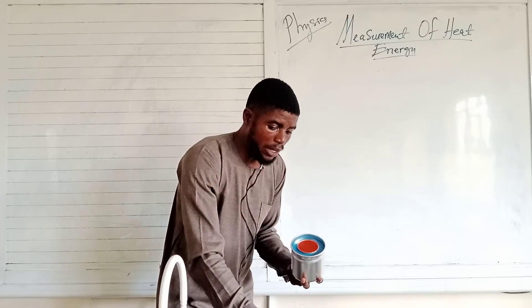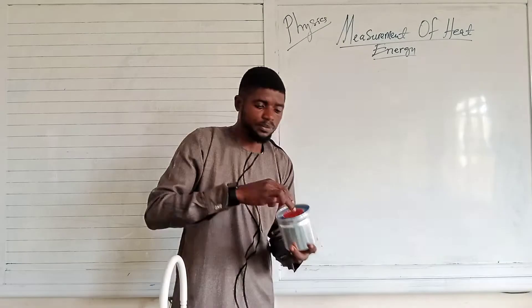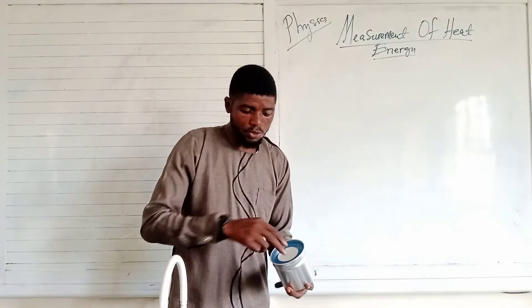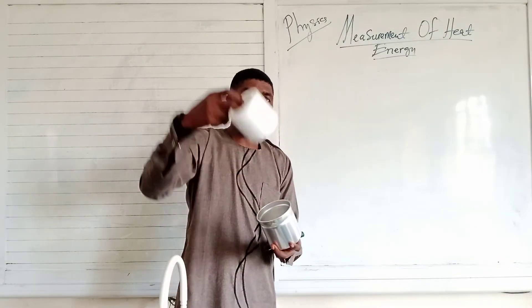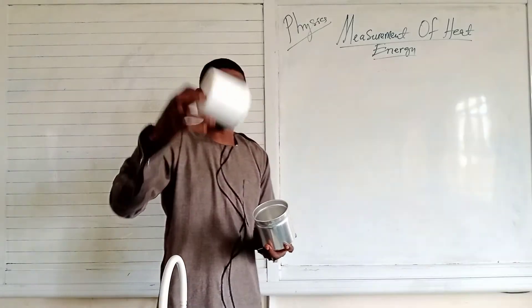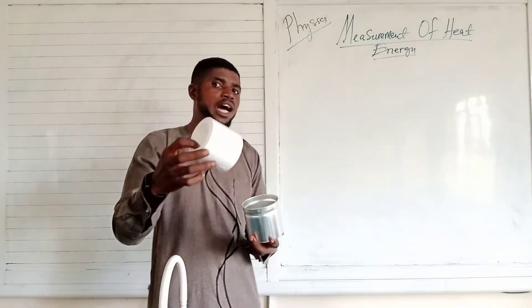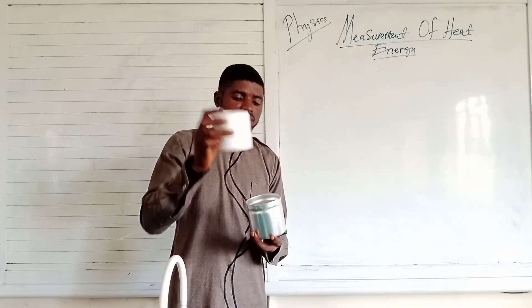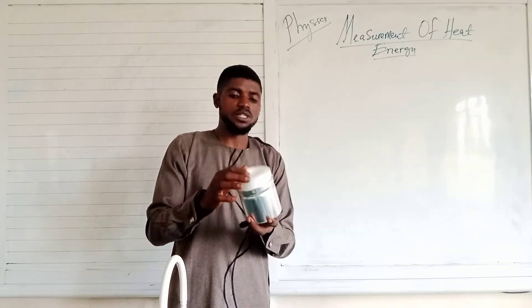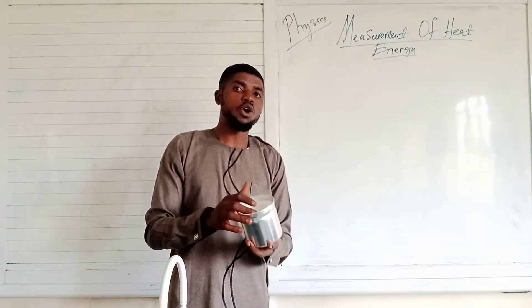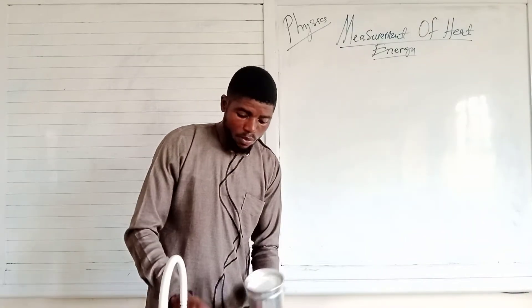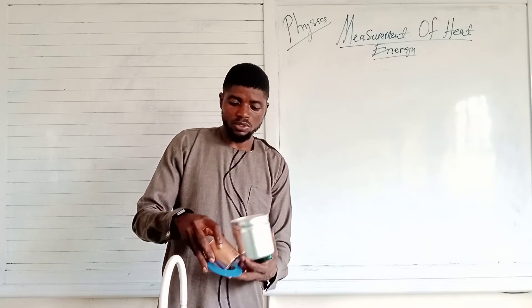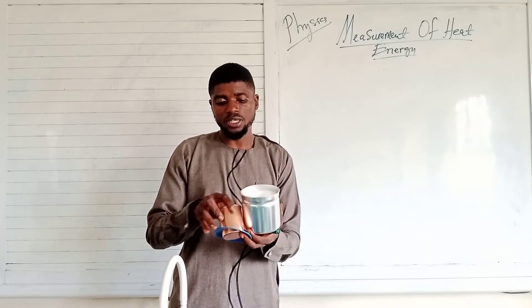Now the calorimeter is lagged — we call it the lagging of the calorimeter. The calorimeter is lagged to prevent heat loss through conduction. With this, heat cannot be lost through the outer casing by conduction.